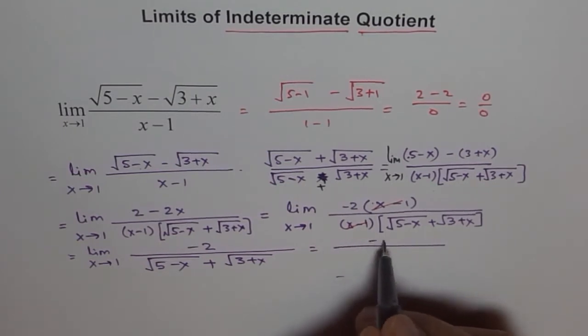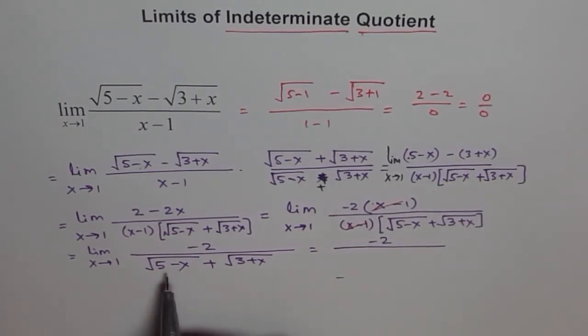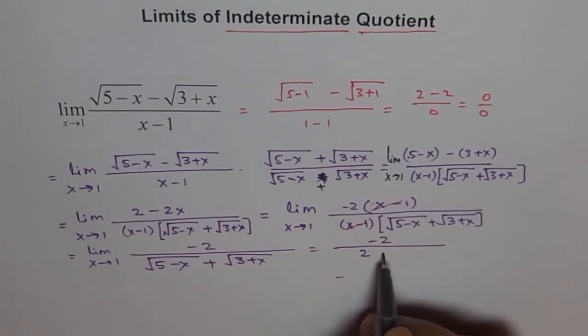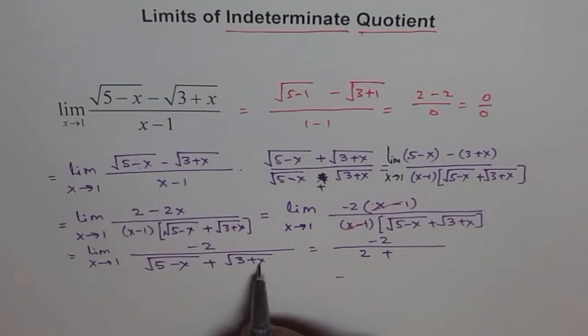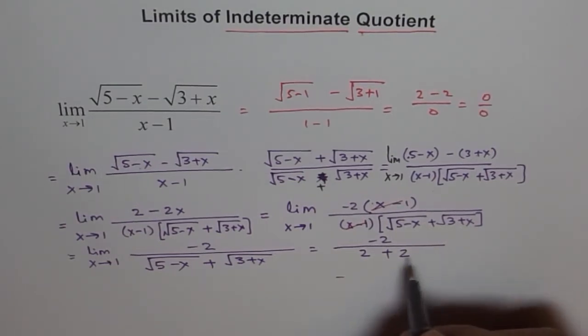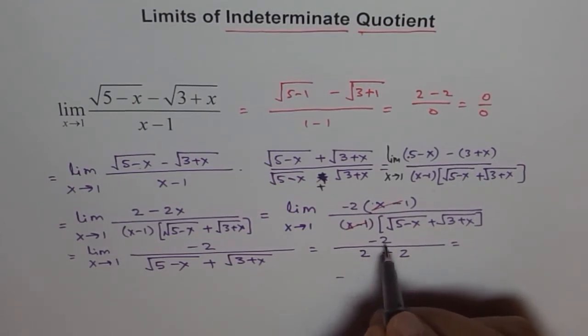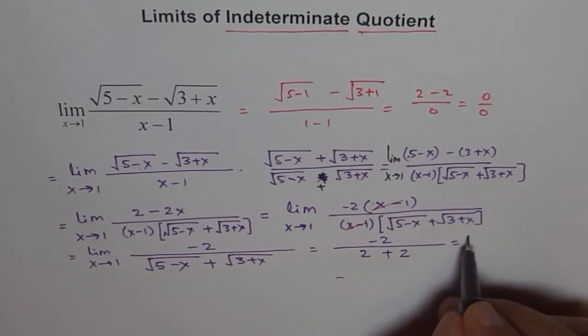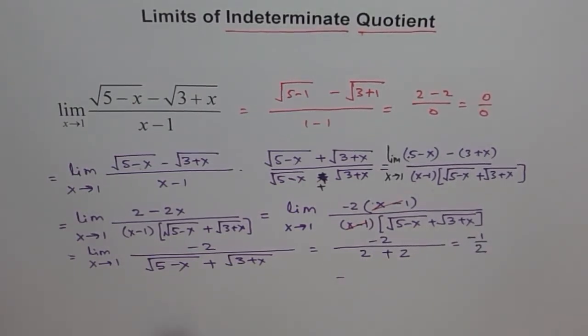If we do that we get minus 2 here and 5 minus 1 is 4, square root of 4 is 2. And then here we get plus, 3 plus 1 is 4 and square root of 4 is 2. So we get 4 here. So we get minus 2 divided by 4 which is minus 1 over 2. So limit of this function is minus half.